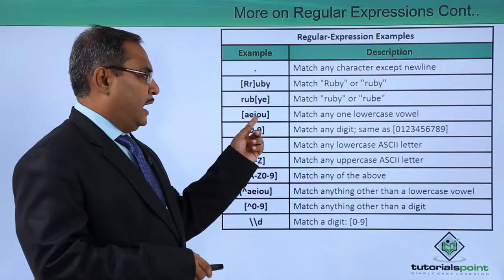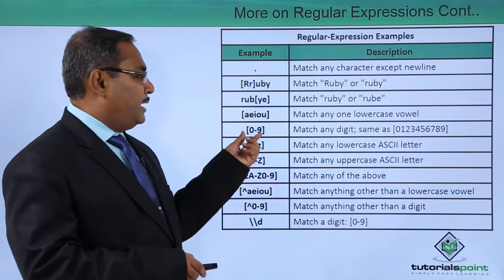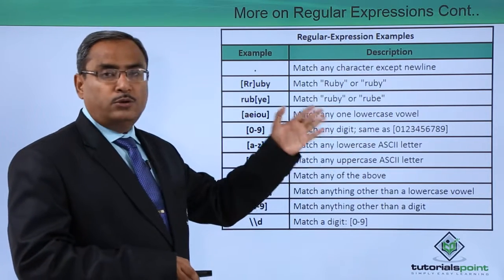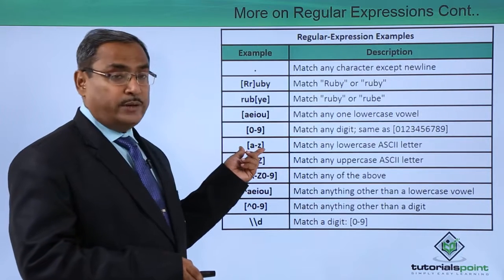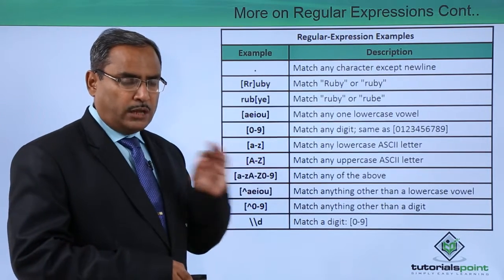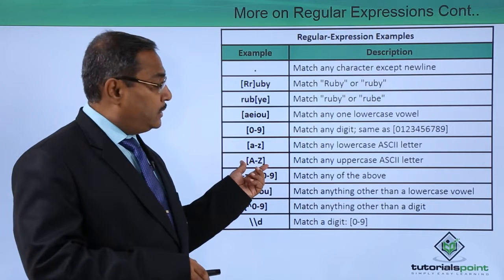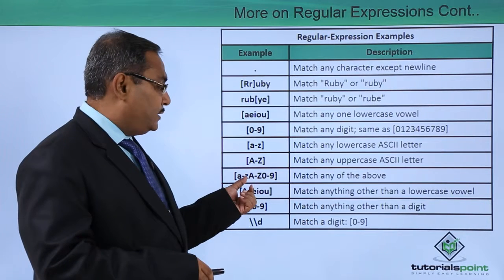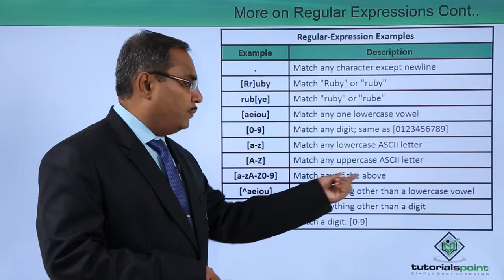`[aeiou]` within square brackets matches any one lowercase vowel. `[0-9]` matches any digit, same as writing 0 through 9 explicitly. `[a-z]` matches any lowercase letter. `[A-Z]` matches any uppercase letter. `[a-zA-Z0-9]` matches any one of the above — meaning either a lowercase letter, an uppercase letter, or a digit.